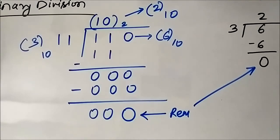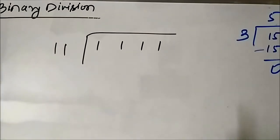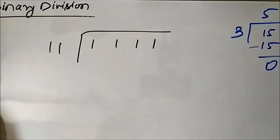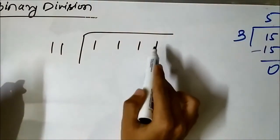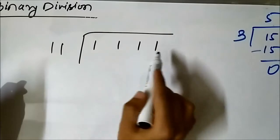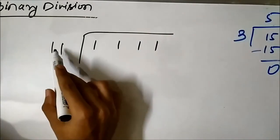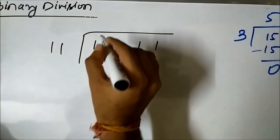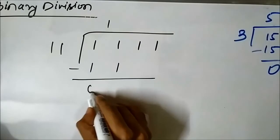Let us now discuss another example. We will perform the division 15 divided by 3. In decimal, the quotient is 5 and the remainder is 0. In binary, 15 is 1 1 1 1 (a 4-bit number) and 3 is 1 1. We compare the divisor with the first two bits of the dividend; they are exactly the same, so we place 1 in the quotient and subtract: 1 1 minus 1 1 gives 0 0.